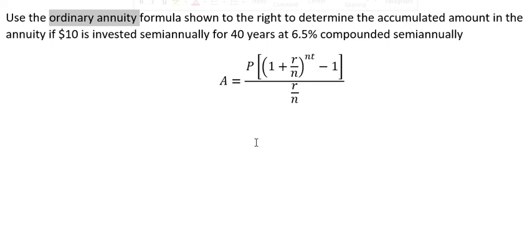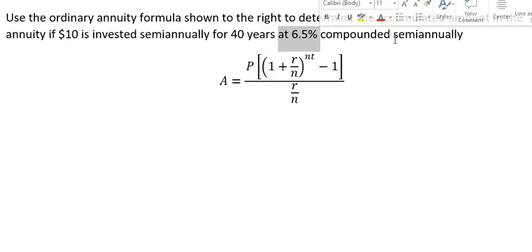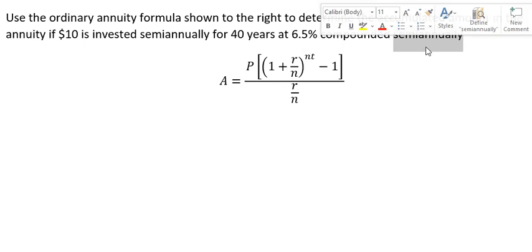So now I will show you how to answer. We have $10 invested in an annuity for 40 years, 6.5% compounded semi-annually.